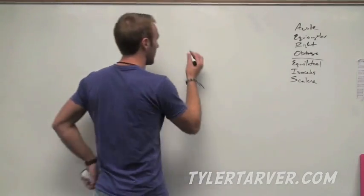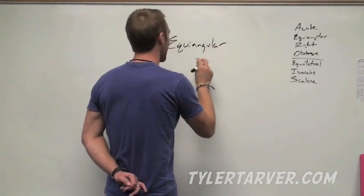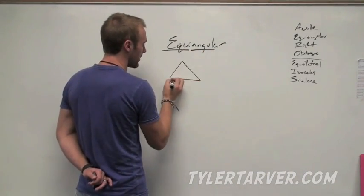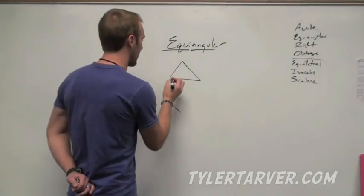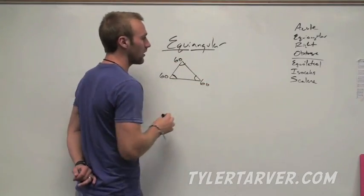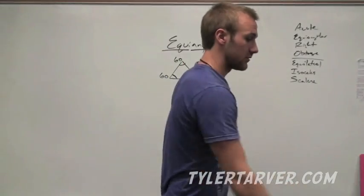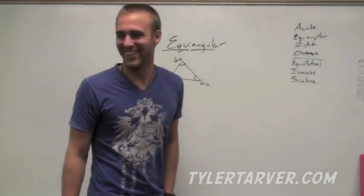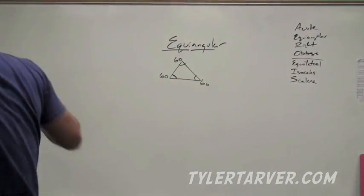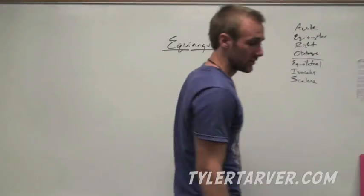Next is equiangular. Just like it sounds, it means that they have equal angle measures. The only angle measures they can be — if all three are equal, they're all the same. That means they all have to be 60 degrees. So any time a triangle is equiangular, all angles have to be 60. That's equiangular.